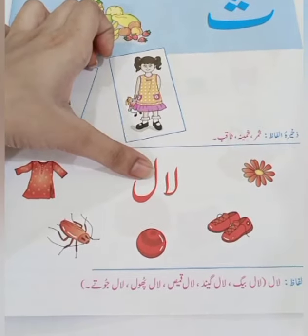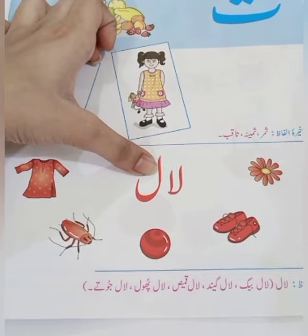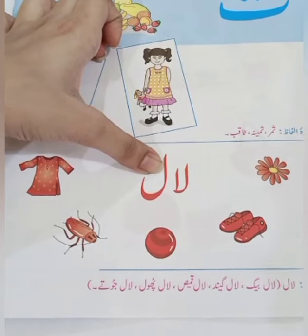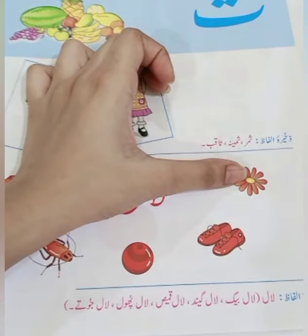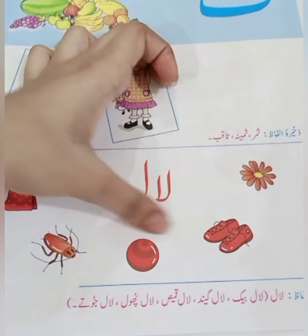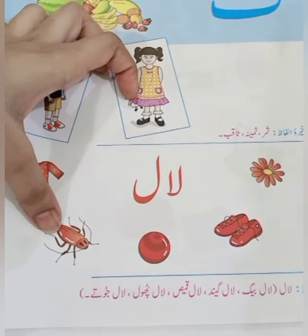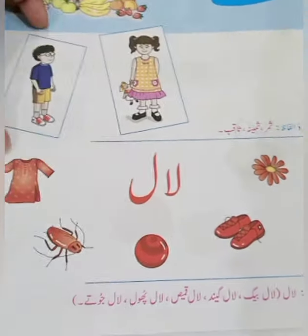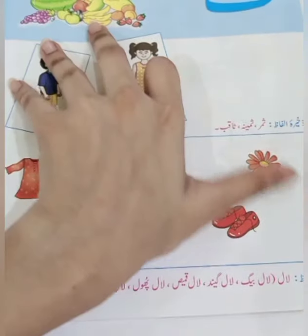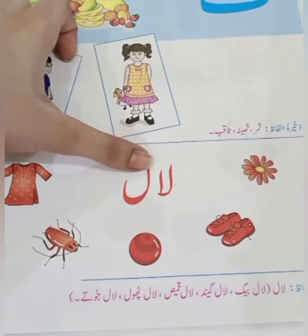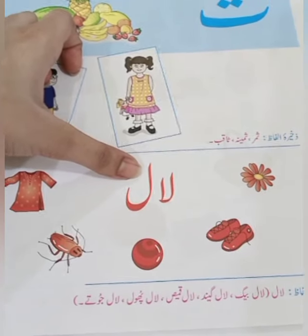پیارے بچوں، یہ ہیں لال۔ یہ کیا لکھا ہے؟ لال۔ لام الف لال، لام ساکے لال۔ لال پھول، لال جوتے، لال گیند، لال بیگ، اور لال کمیز۔ یہ ساری چیزیں لال ہیں۔ لام الف لال، لام ساکے لال رنگ کی ہیں۔ (Dear children, these are red things - red flower, red shoes, red ball, red bag, red shirt.)